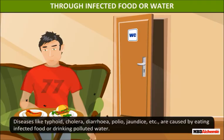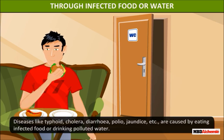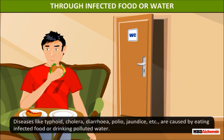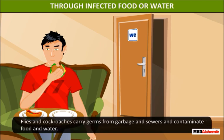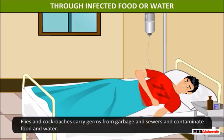Through infected food or water: diseases like typhoid, cholera, diarrhea, polio, and jaundice are caused by eating infected food or drinking polluted water. Flies and cockroaches carry germs from garbage and sewage walls and contaminate food and water.